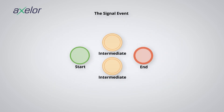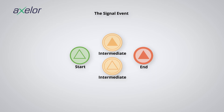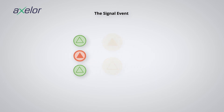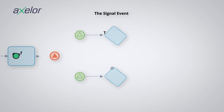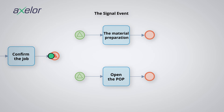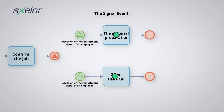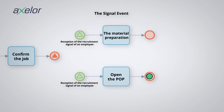The signal event. These are events represented with a triangular pictogram. The signal event behaves in a similar way to message events, but unlike the latter, a signal can be sent to several signal reception events. In this example, at the end of a recruitment process, an event sends a signal when a new employee is recruited. The signal is picked up by two processes: the material preparation process and the company savings plan opening process.